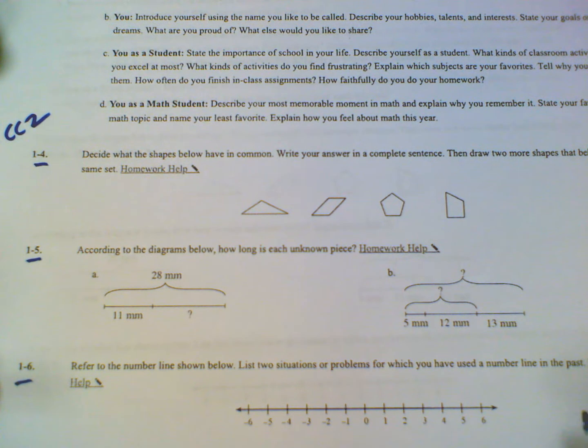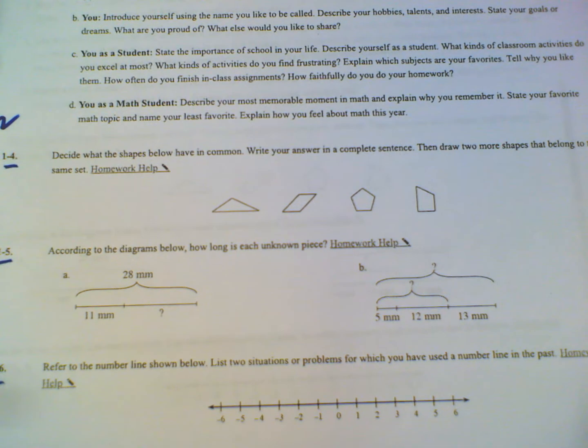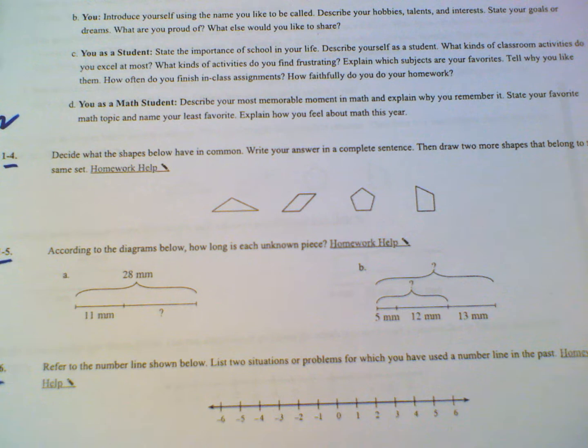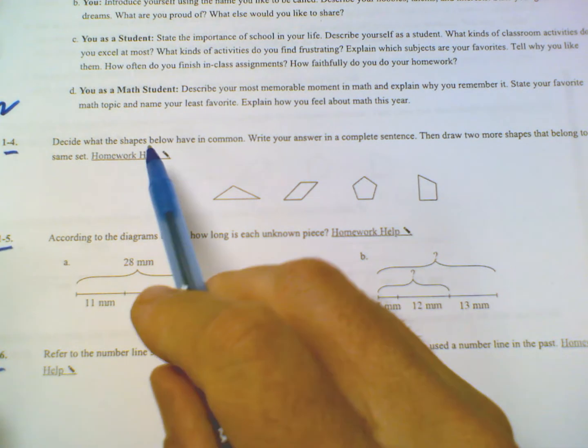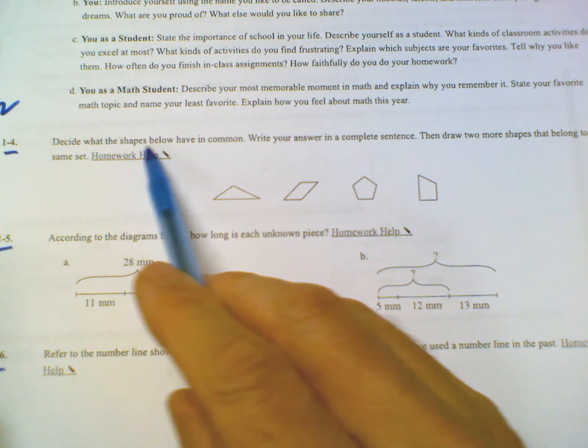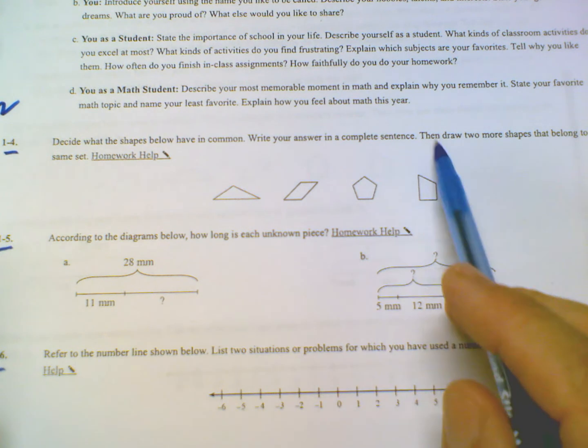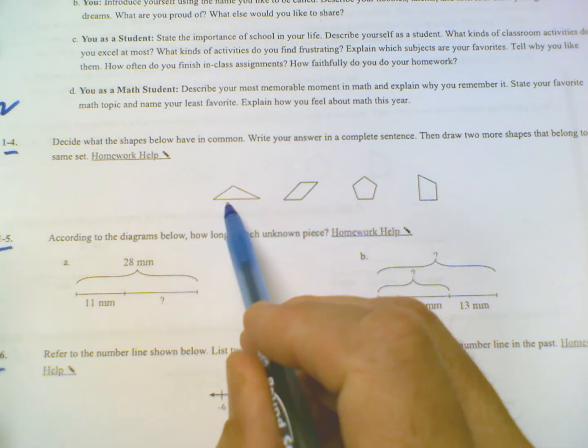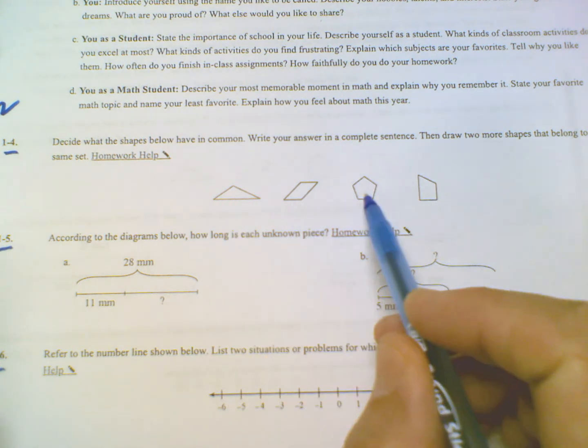Problem 1-4 is asking us to decide what the shapes below have in common and write your answer in complete sentences. If I look at these shapes, what are each of these shapes? If we look at what they may have in common, first of all, it's always good to remember your vocab.